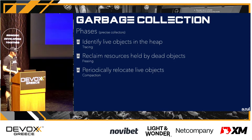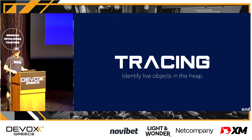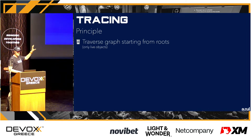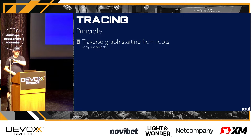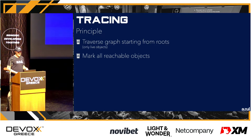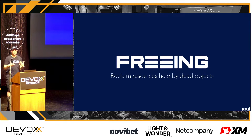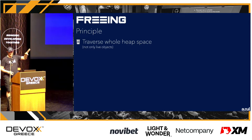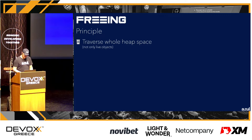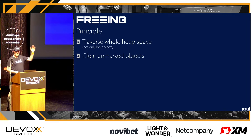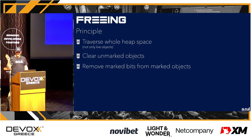Tracing means we traverse the graph from the GC roots and search for all references to live objects, then mark them as reachable. Freeing means we go to all memory areas, scan them — are you used, are you not? — and clear the unmarked objects. We mark them first, then clear them, then remove the marked bits from the live objects, and start again. Compaction is about moving things around — there are two strategies: moving and copying.